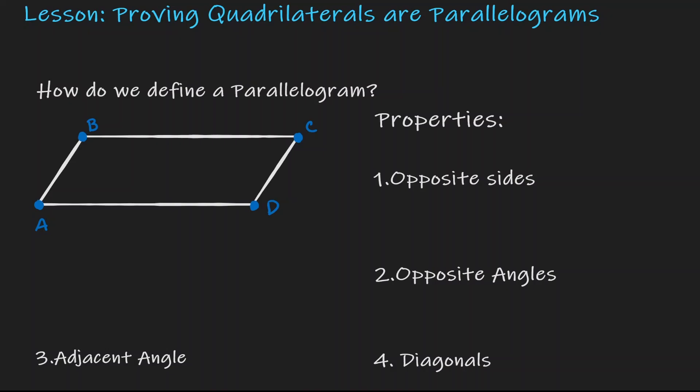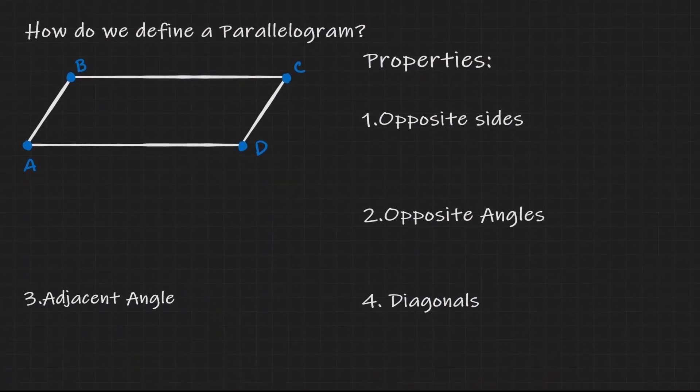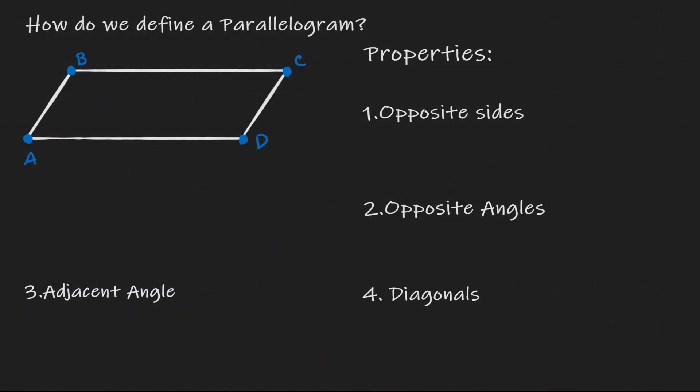Welcome. Today we will be proving how quadrilaterals can be labeled as parallelograms. Let's start by remembering what a parallelogram is. A parallelogram is a figure where opposite sides are parallel to each other. That's the definition of a parallelogram.